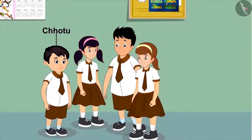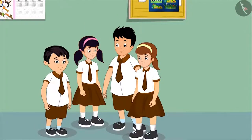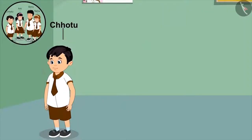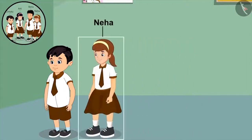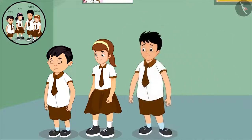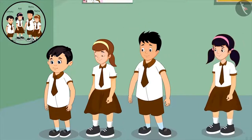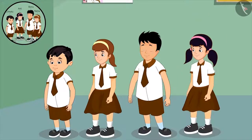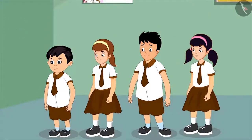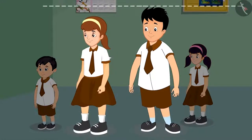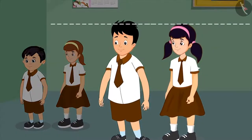Chotu and his three friends — Aarti, Neha, and Sonu — begin to stand in a line. Being the shortest among all four children, Chotu stands in front. Neha, who is taller than him but shorter than the rest, stands behind him. Sonu stands behind Neha, and then finally Aarti stands behind Sonu. But Sonu just notices that he is taller than Neha, but fails to notice that Aarti is shorter than him.